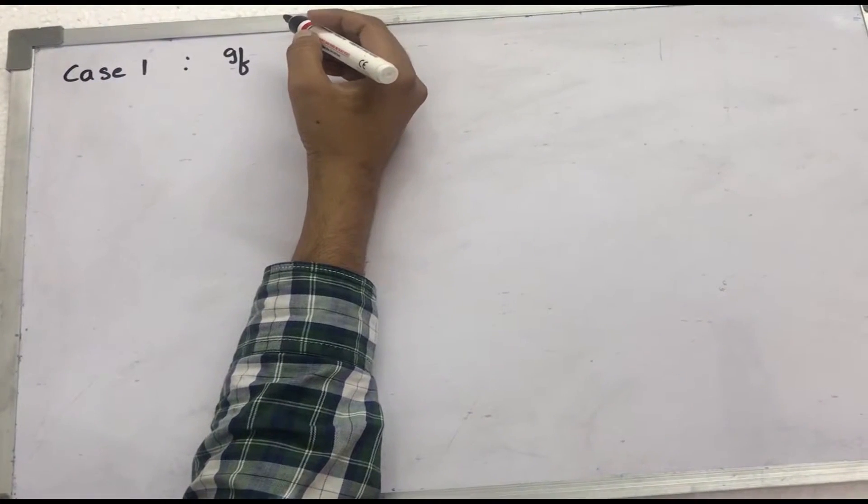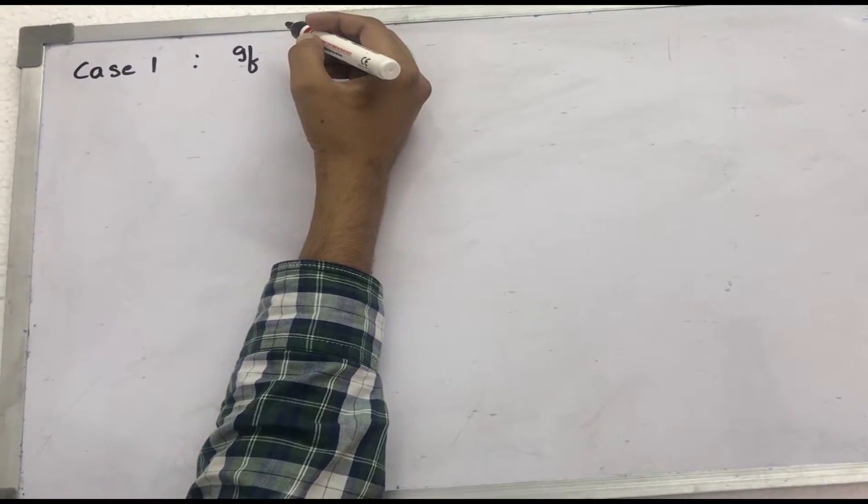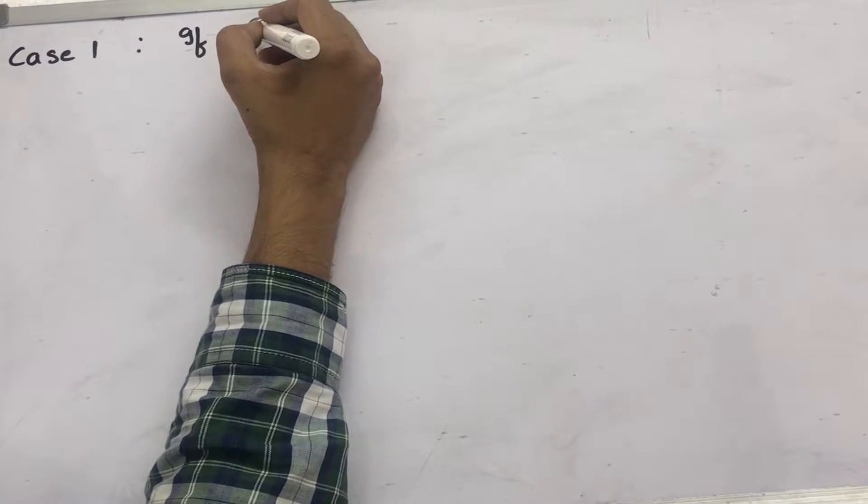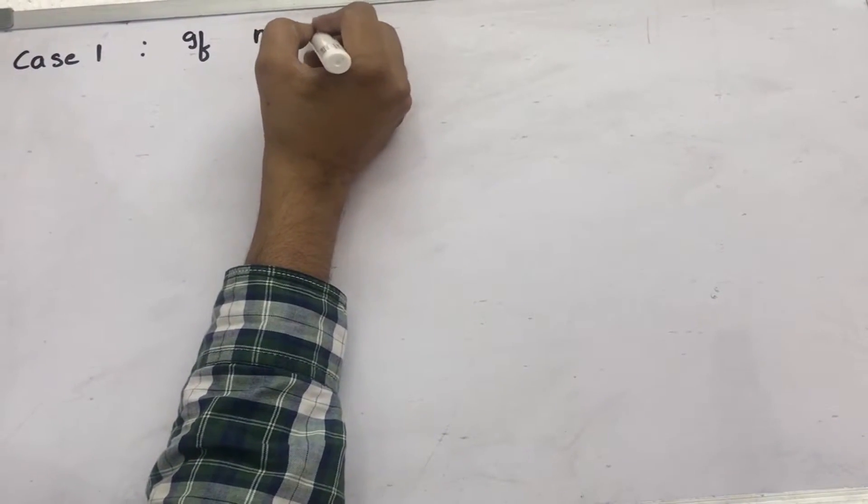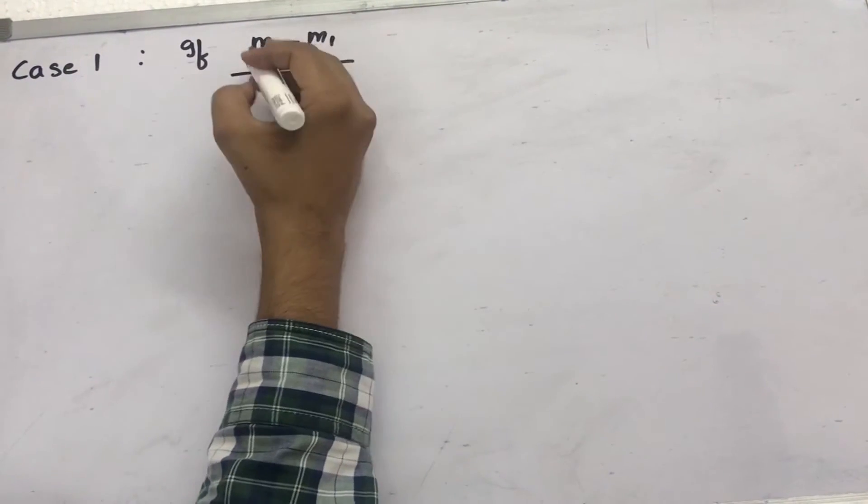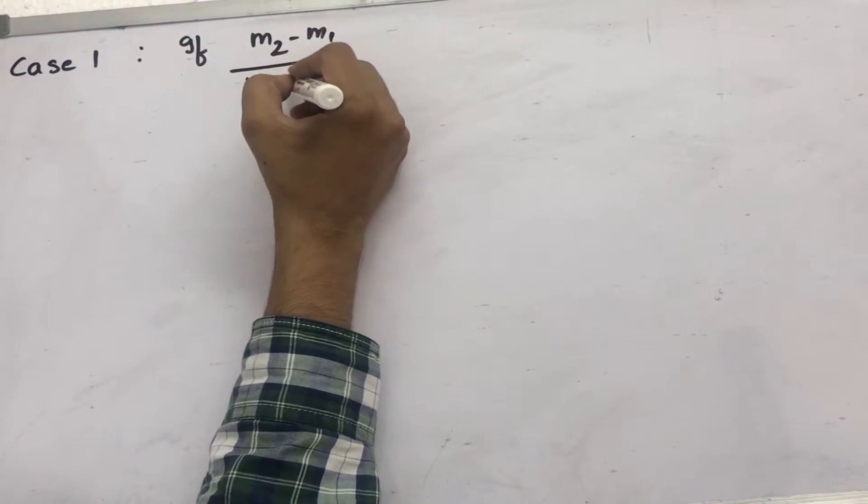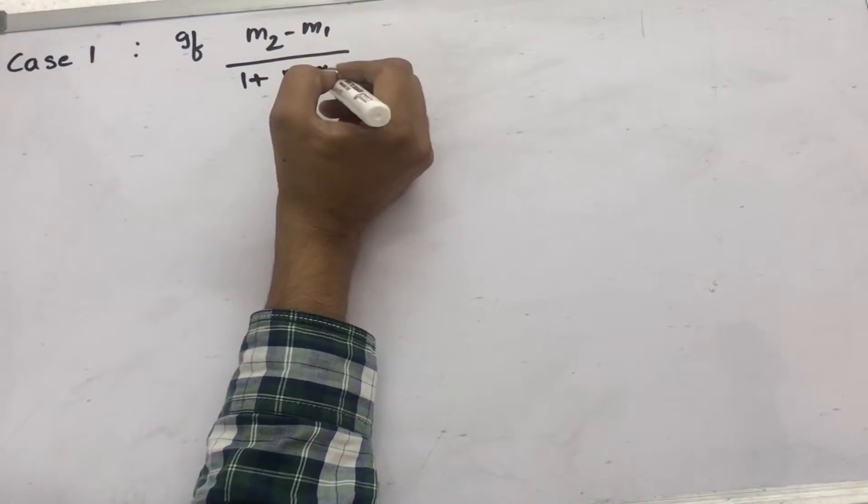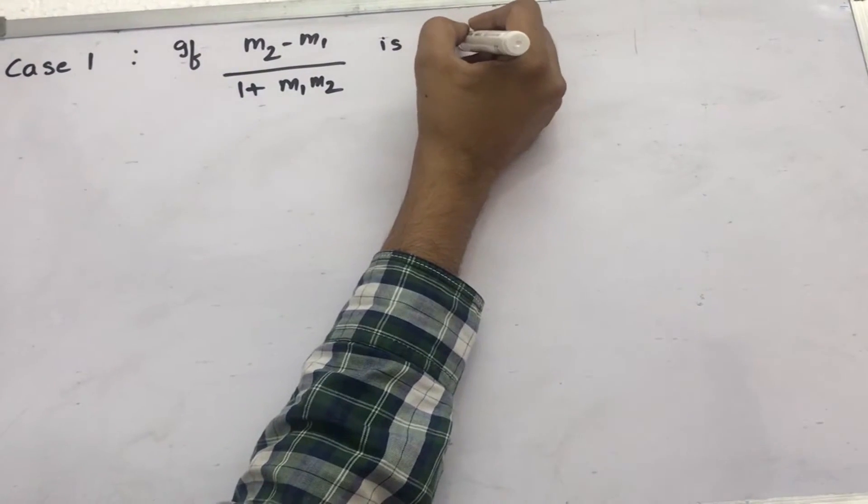Now, we look at two cases related to the angle between two lines. If m2 minus m1 divided by 1 plus m1 m2 is positive,